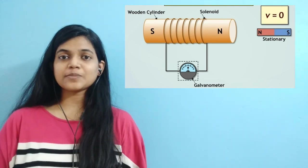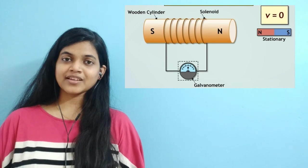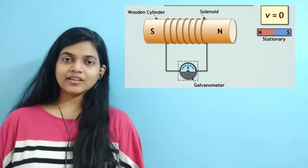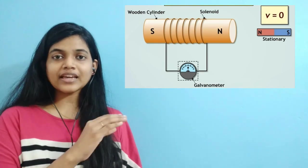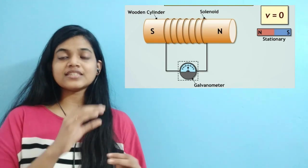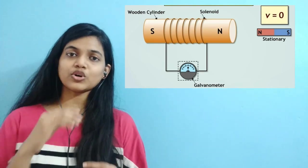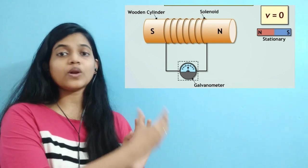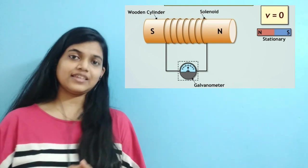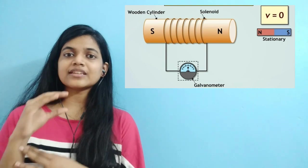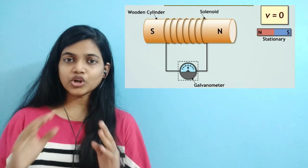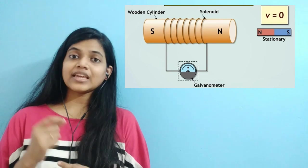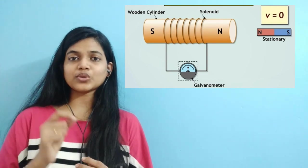As we all know, a magnet has a north pole and a south pole. Consider the magnet facing the coil with its north pole. When we are keeping the magnet stationary at a point and it is not moving, there is no deflection in the galvanometer, indicating that there is no current flow through the solenoid.